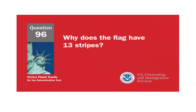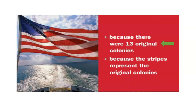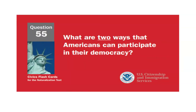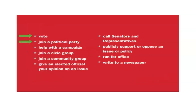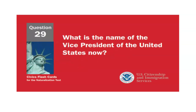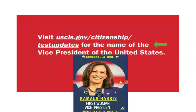Why does the flag have 13 stripes? Because there were 13 original colonies. What are two ways that Americans can participate in their democracy? Vote and join a political party. What is the name of the vice president of the United States now? Kamala Harris.